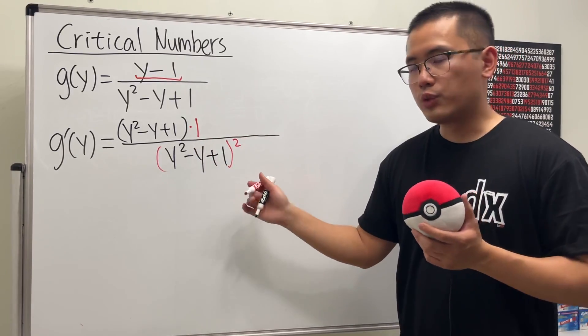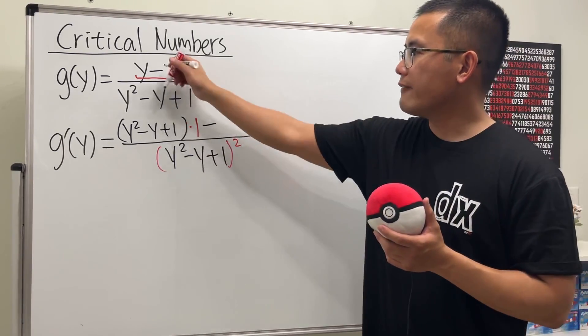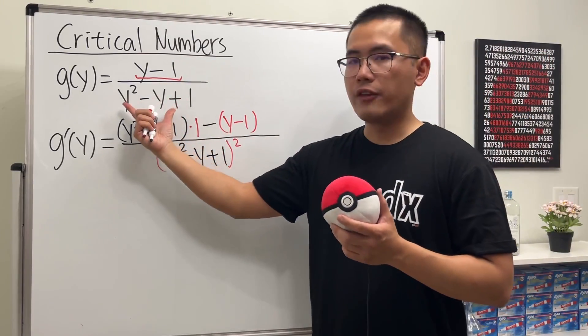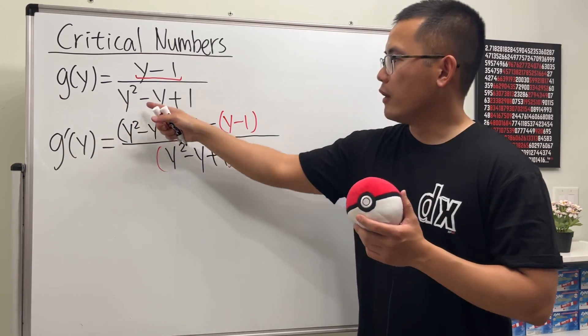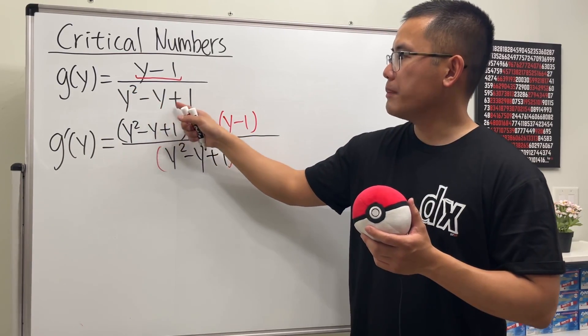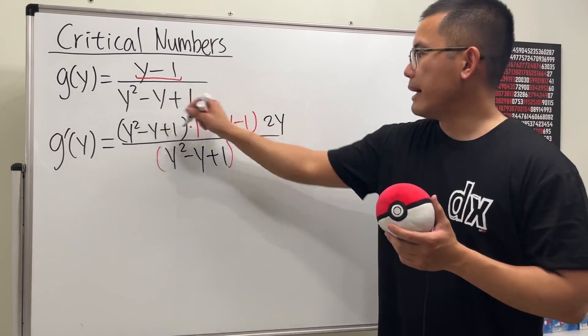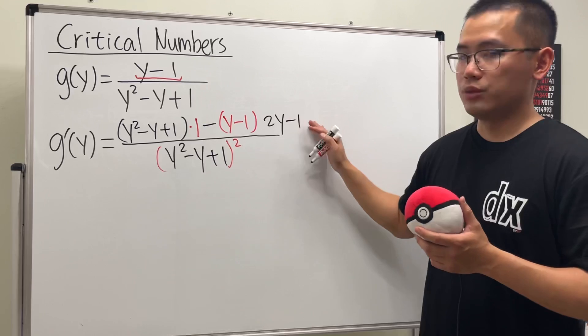And then for the quotient rule, we have to subtract the top function, which is y minus 1. And then we multiply by the derivative of the bottom. Y squared minus y plus 1, first we get 2y, and then minus 1, and then the derivative of 1 is 0.